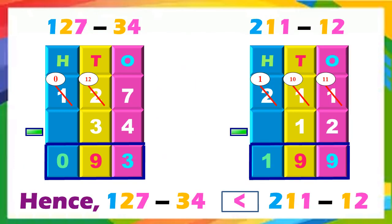Children, we can see that when we subtract 127 minus 34, we get the difference as 93. Similarly, when we subtract 211 minus 12, we get the difference as 199. So 93 is lesser than 199. Hence, 127 minus 34 is lesser than 211 minus 12. I hope you all understood this concept. Thank you.